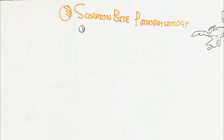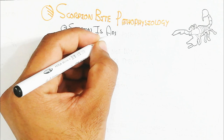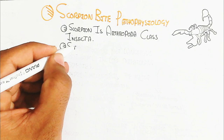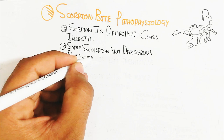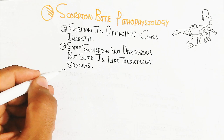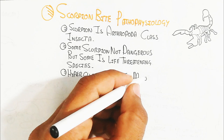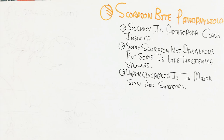The scorpion is an arthropod, class Insecta — it is basically an insect containing venom in its tail. Some scorpions are not dangerous but some species are life-threatening. Hyperglycemia is a major sign and symptom, leading to physiological changes like hypertension, and sometimes hypotension, through activation of the adrenergic and cholinergic axes.